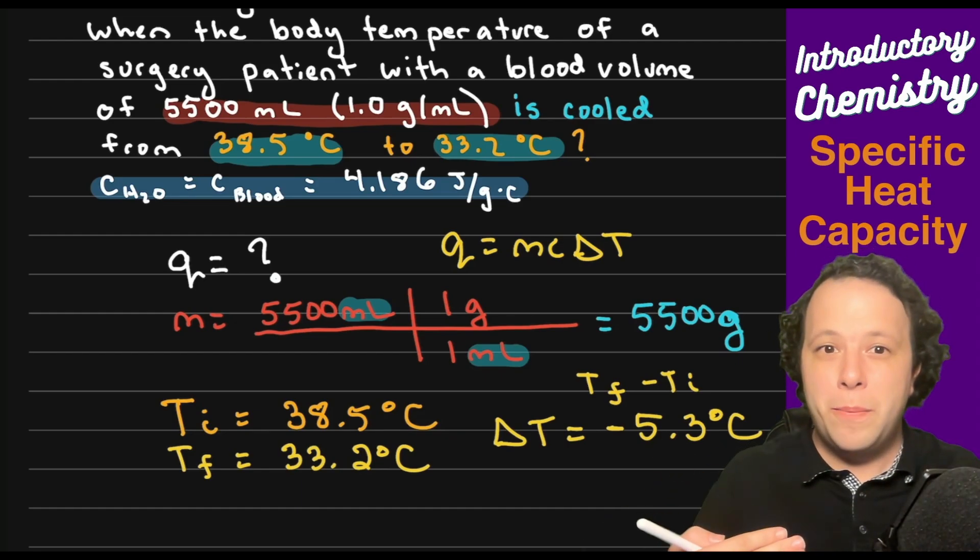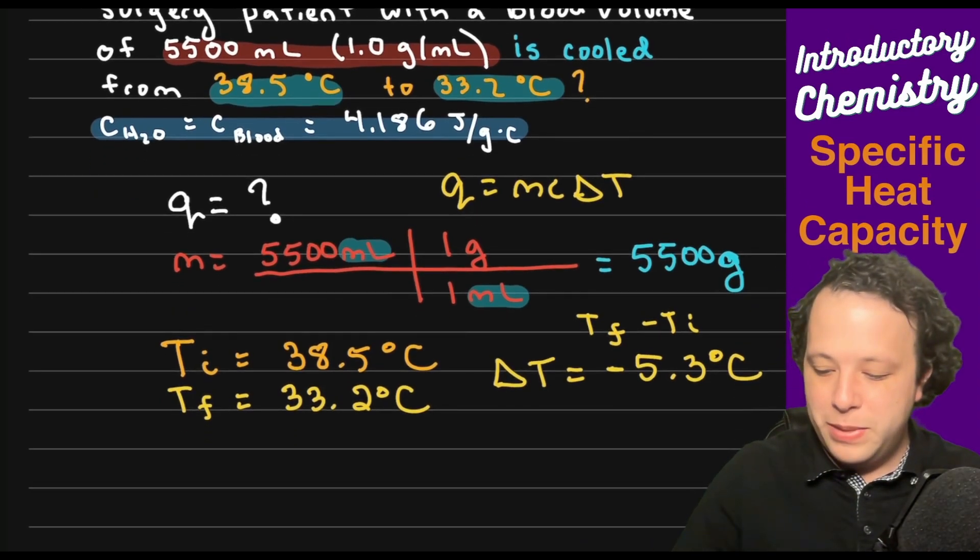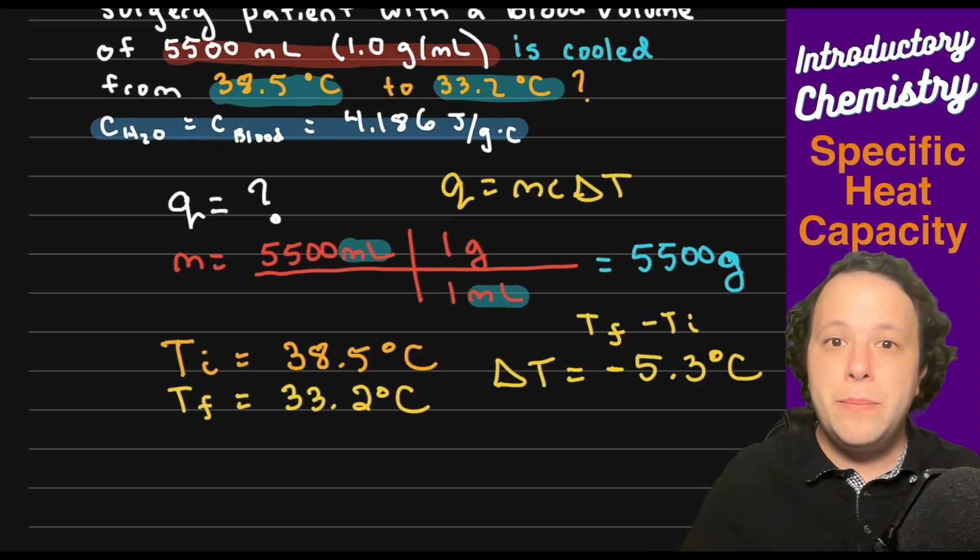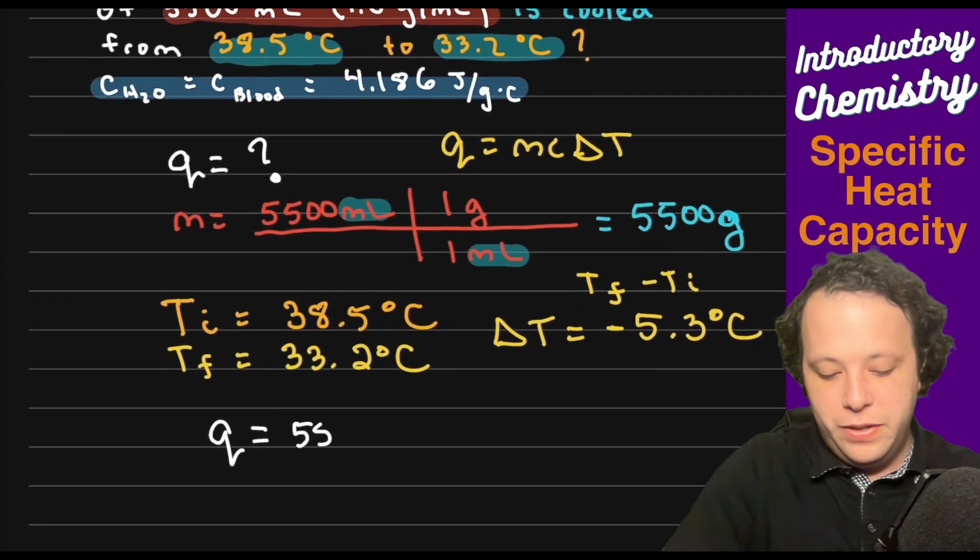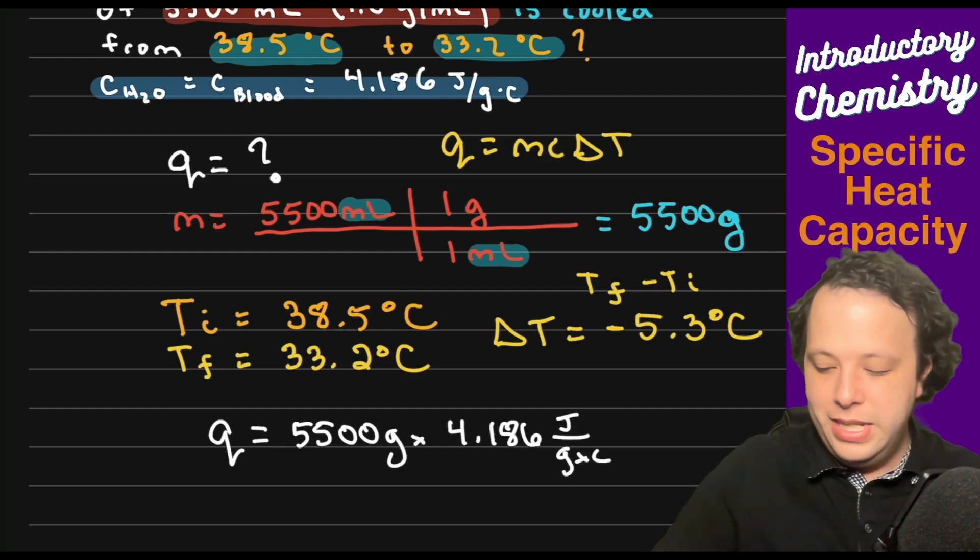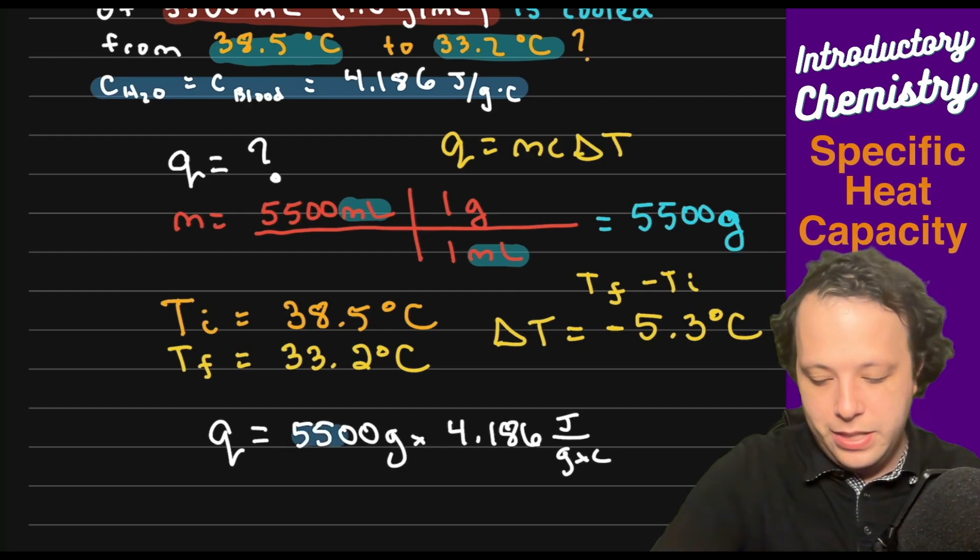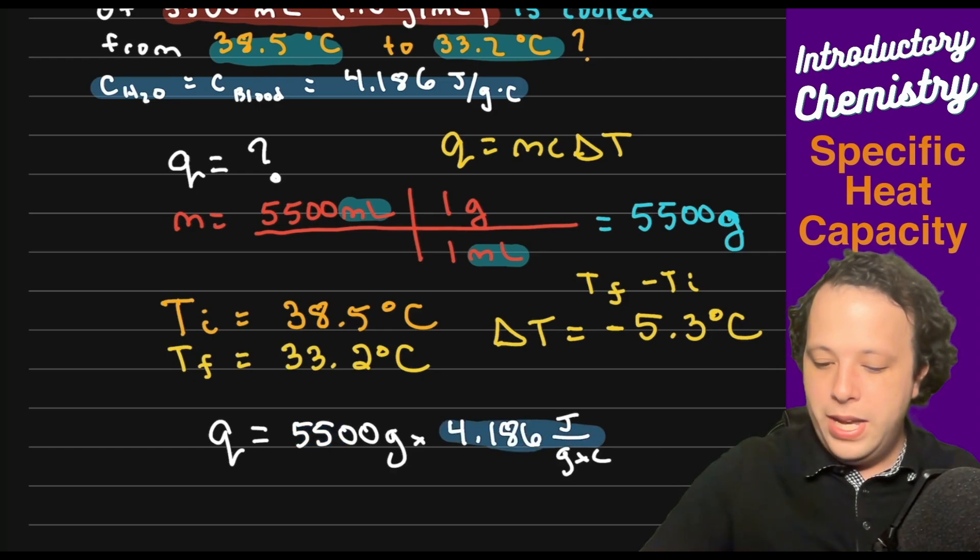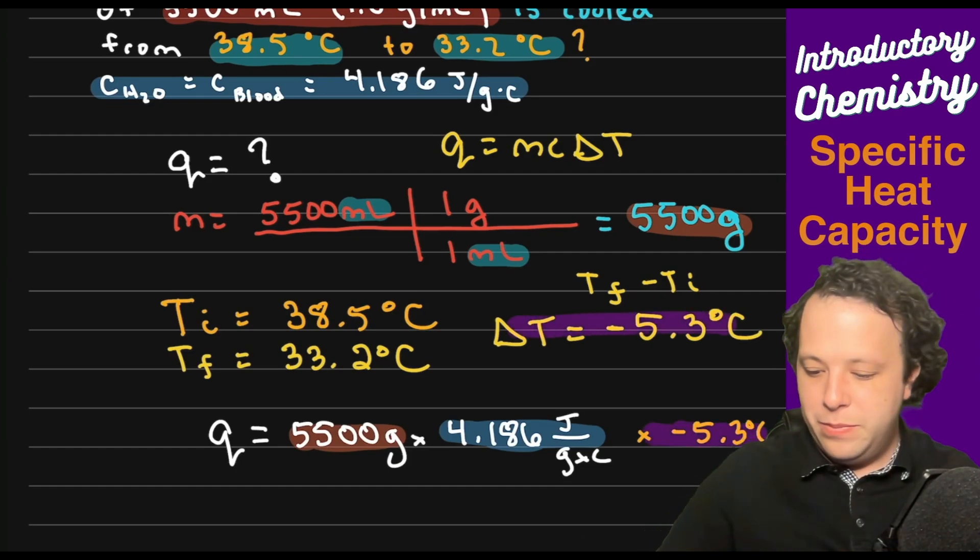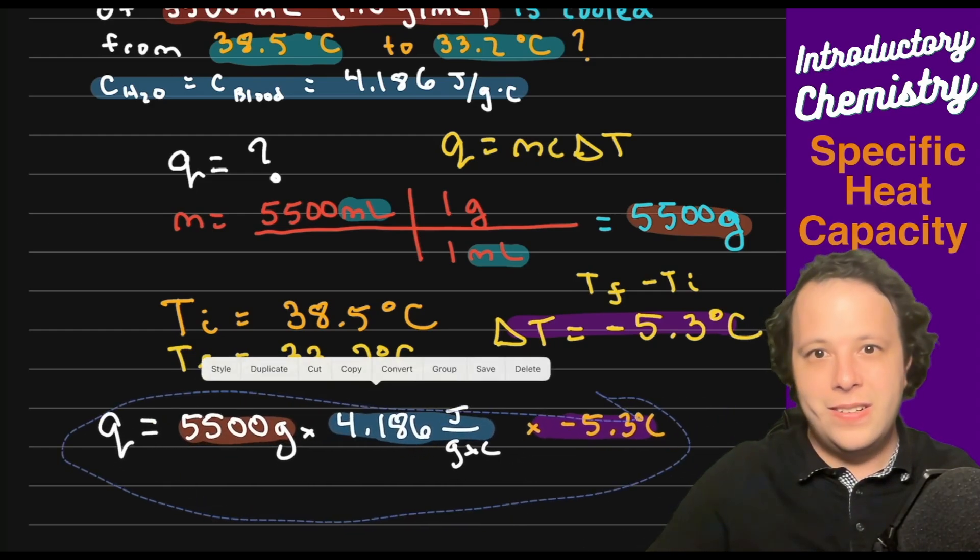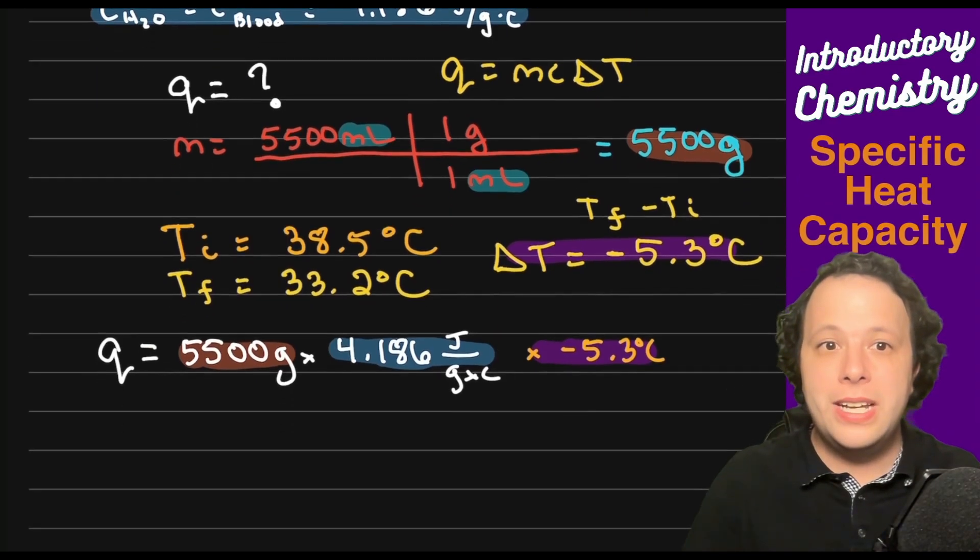What we're going to have to do is use this to get delta T. Delta T is final minus initial. If we take 33.2 minus 38.5, what we are going to get is -5.3 degrees C. Now that we have all of our pieces here, and we also have our specific heat as well, we can plug in all these pieces into our equation. We're trying to find heat. We have our mass which is 5500 grams. We are going to multiply that by the specific heat which is 4.186 joules per grams by C.